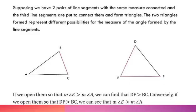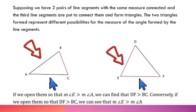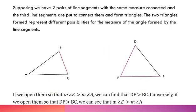Supposing we have two pairs of line segments with the same measure connected, and the third line segments are put to connect them and form triangles. The two triangles represent different possibilities for the measure of the angle formed by the line segments.